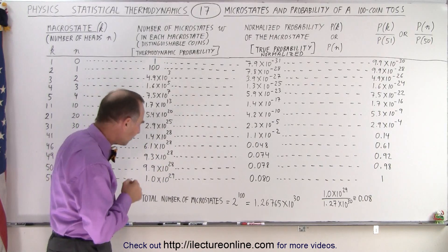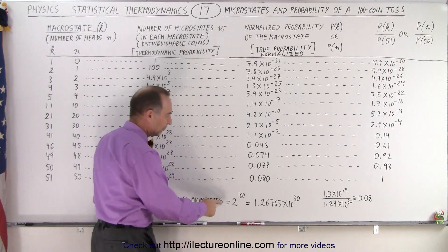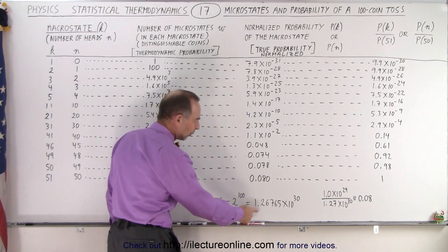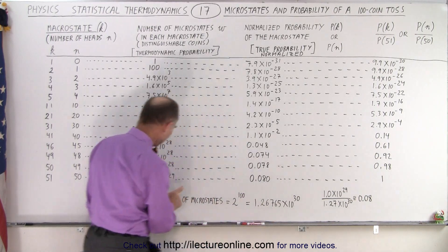Where does that number come from? Well, the total number of microstates is 2 to the 100 power. Now, if you convert that to a decimal, that's 1.26, basically 1.27 times 10 to the 30th.